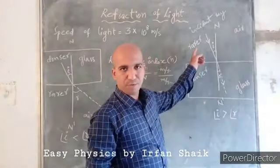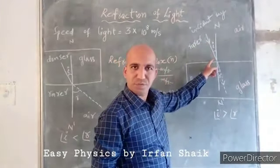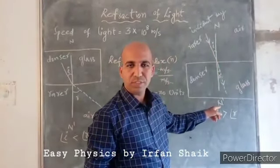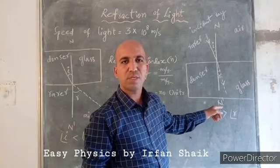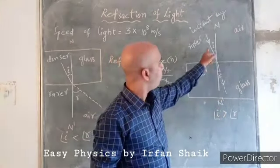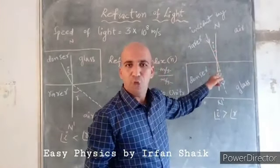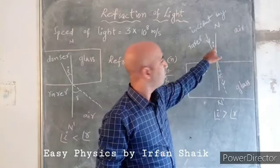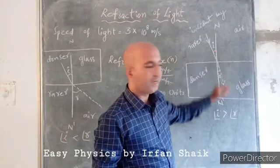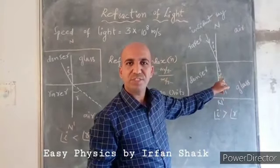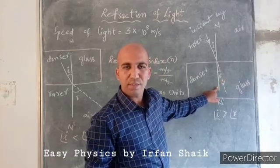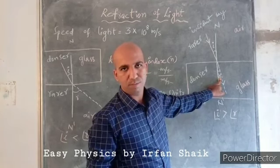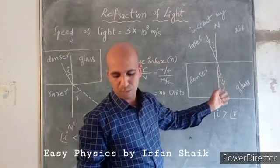If we observe carefully, the angle between the incident ray and the perpendicular line — the normal line MN — is called the angle of incidence, denoted by small i. The angle between the refracted ray and the normal line is called the angle of refraction, denoted by small r. Now we are going to discuss how these two values relate.